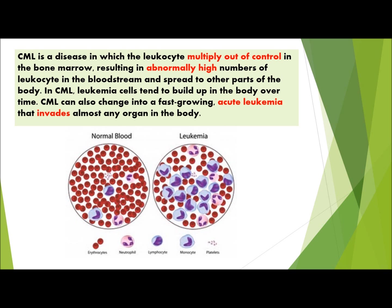CML is a disease in which leukocytes multiply out of control in the bone marrow, resulting in abnormally high numbers of leukocytes in the bloodstream and spread to other parts of the body. In CML, leukemia cells tend to build up in the body over time. CML can also change into a fast-growing acute leukemia that invades almost any organ in the body.